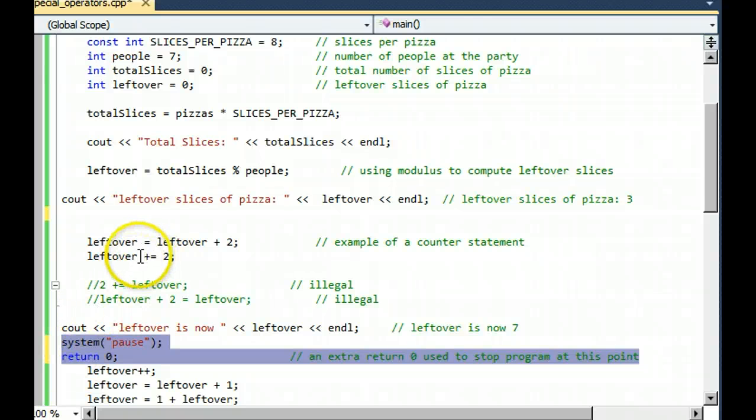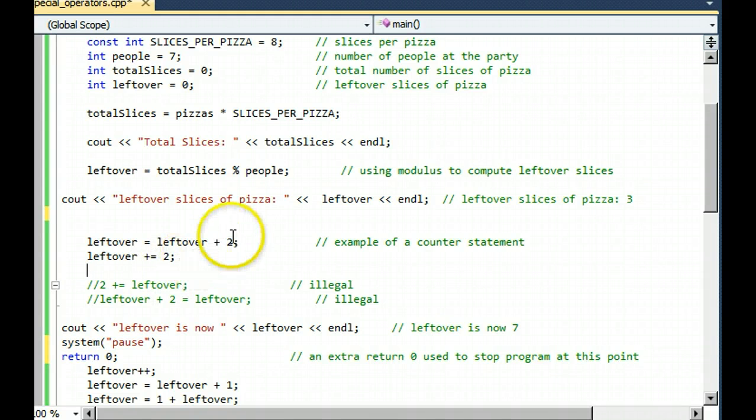We're now going to examine what happens with this compound operator, the plus equals symbol that you read about in the lecture notes. At this point, the program leftover is equal to three. And remember, assignment statements always work from right to left. So three right here plus two is five. And therefore, the five gets now stored in leftover, overwriting the three that used to be there.